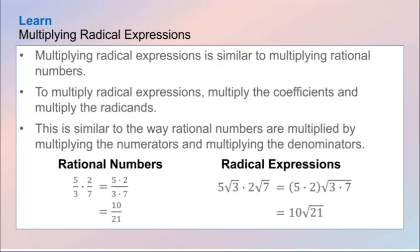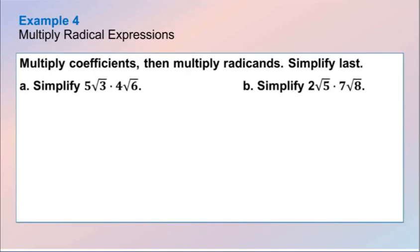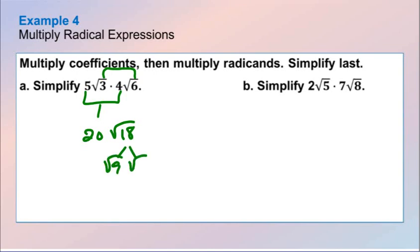The last part for today is multiplying radical expressions. To multiply radical expressions, multiply the coefficients with the coefficients and the radicands with the radicands — just like with rational numbers where you multiply numerator times numerator and denominator times denominator. For example: 5 square root of 3 times 4 square root of 6 gives us 20 times the square root of 18. I can break that down as the square root of 9 times the square root of 2, which gives us an answer of 60 square root of 2.